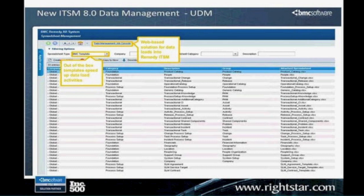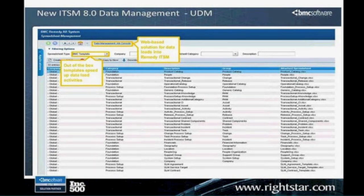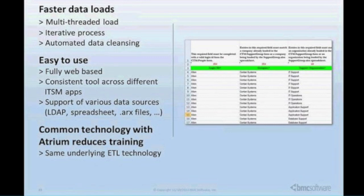Also in ADO they released a new universal data management tool for data loading. BMC is now supplying templates for all the various things you need to bulk import into your system — people, categorizations for both product and operational categories. You simply fill out the template and use the data loading tool to get things in quickly.